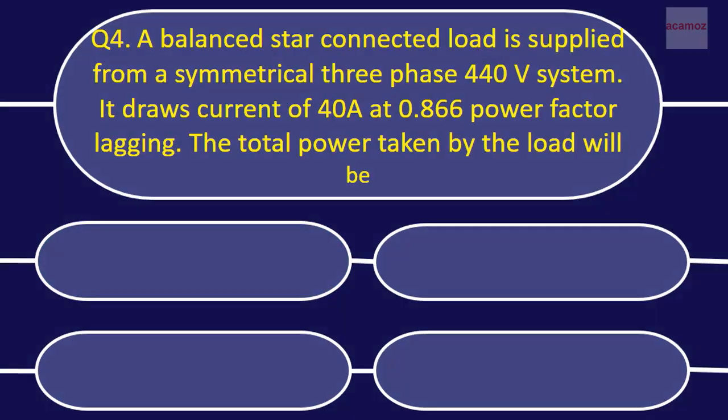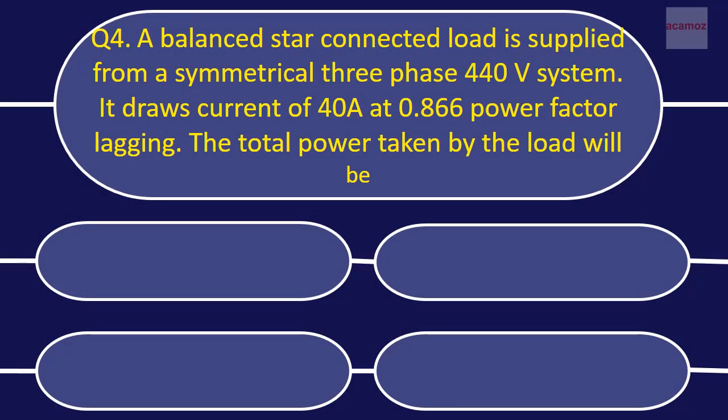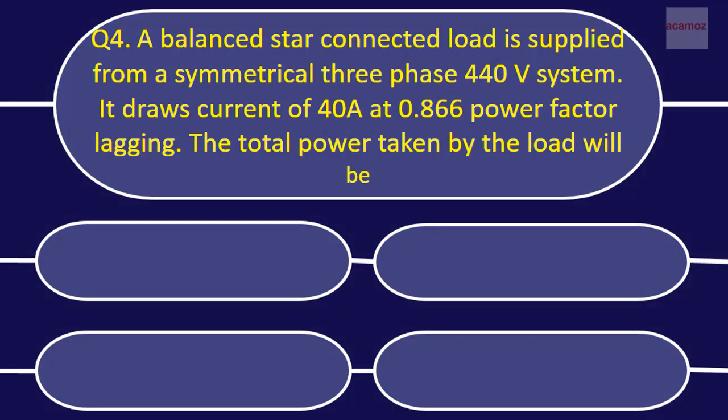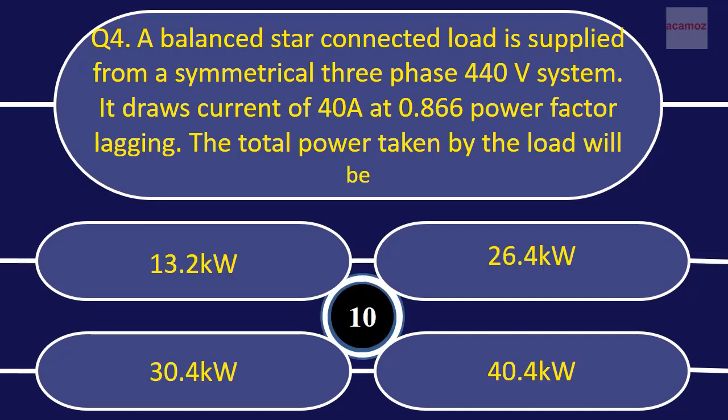Question 4: A balanced star connected load is supplied from a symmetrical three-phase 440V system. It draws current of 40A at 0.866 power factor lagging. The total power taken by the load will be?